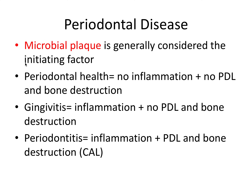There are three states: periodontal health, where there's no inflammation and no PDL or bone destruction; gingivitis, where we have inflammation but no tissue destruction; and periodontitis — synonymous with periodontal disease — where we have inflammation and PDL and bone destruction, which is known as CAL, and we'll talk more about this in a later slide.